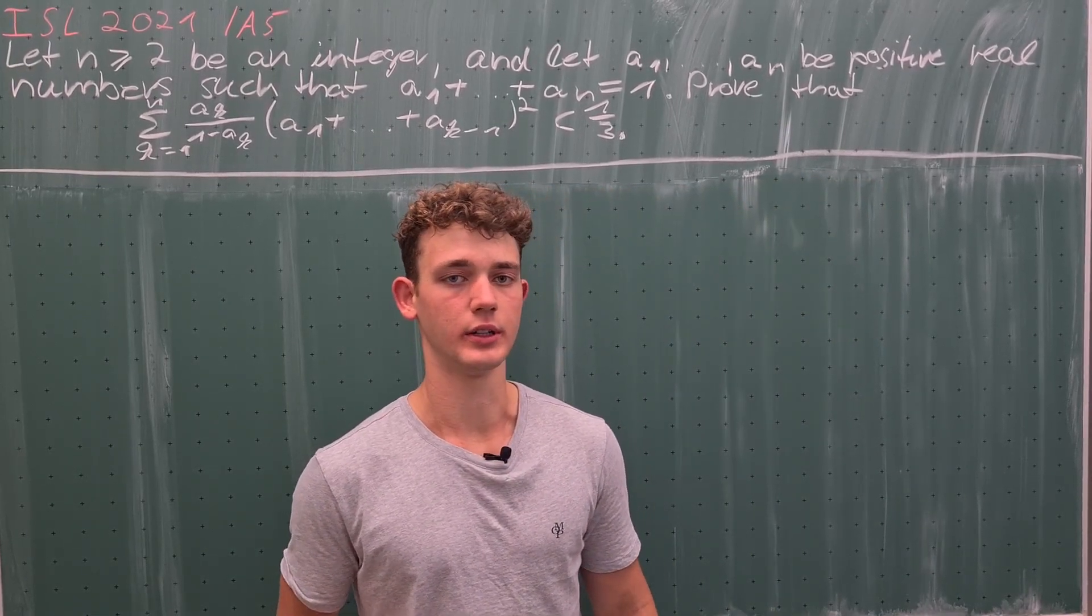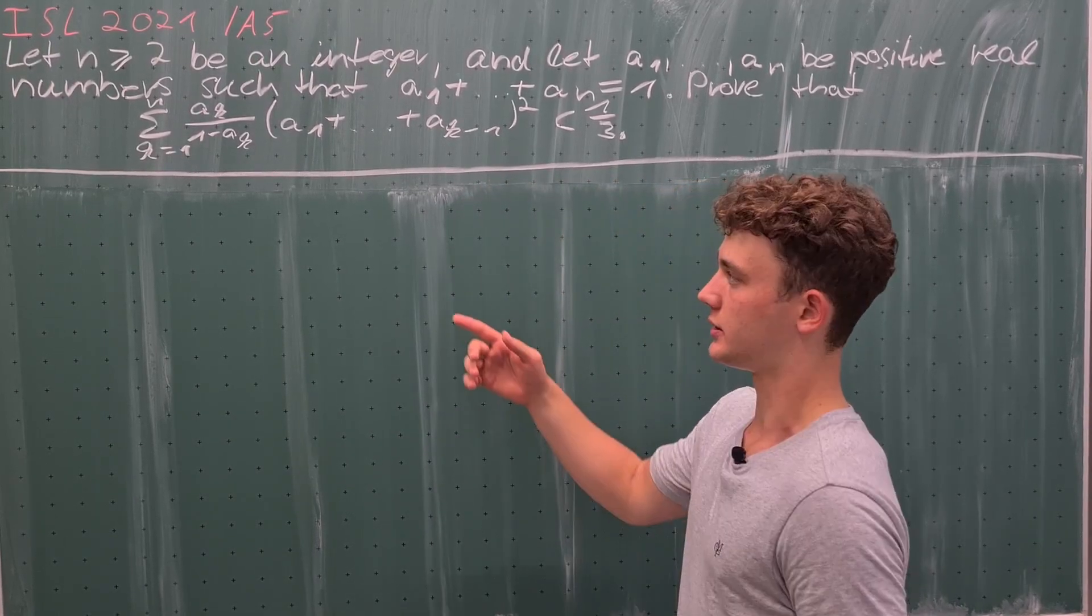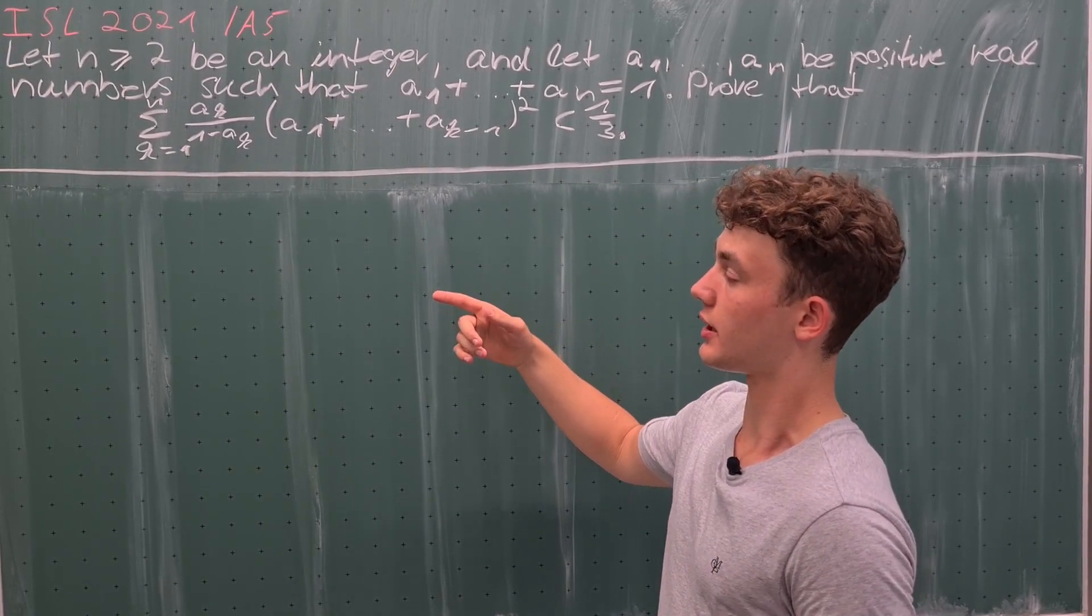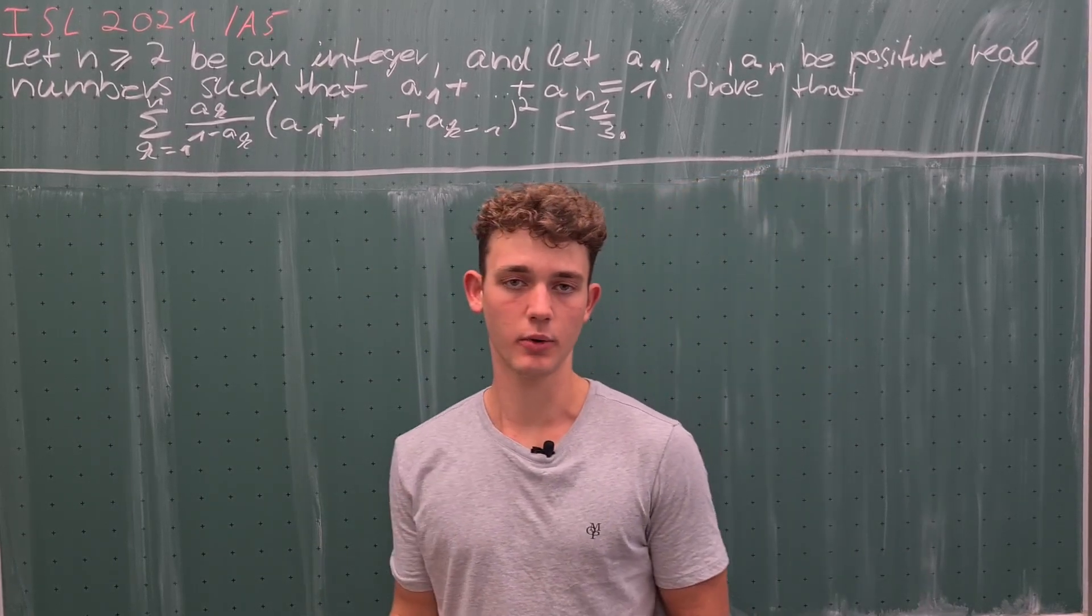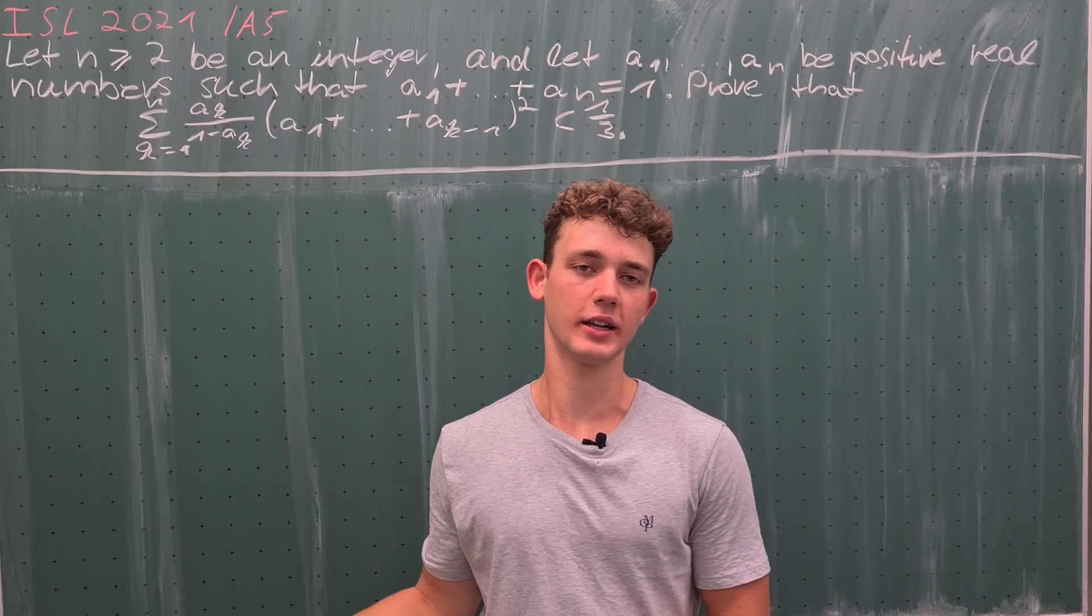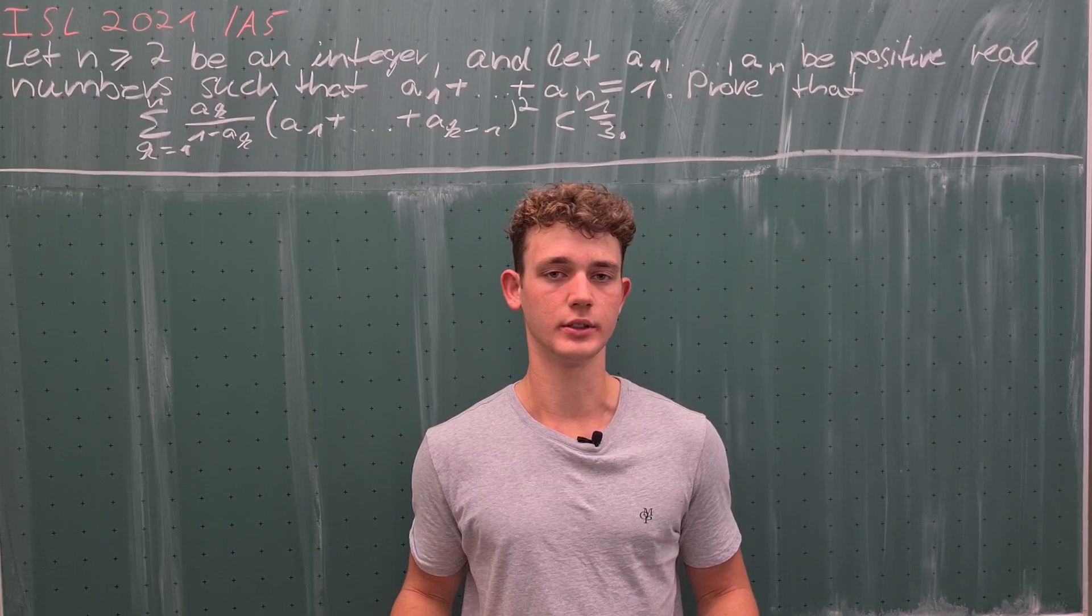We want to prove the following inequality: the sum of k equals 1 up to n of a_k divided by (1 minus a_k) times (a_1 plus dot dot dot plus a_{k minus 1}) all squared is less than one third. To show that this inequality is true, we're going to take a probabilistic approach.